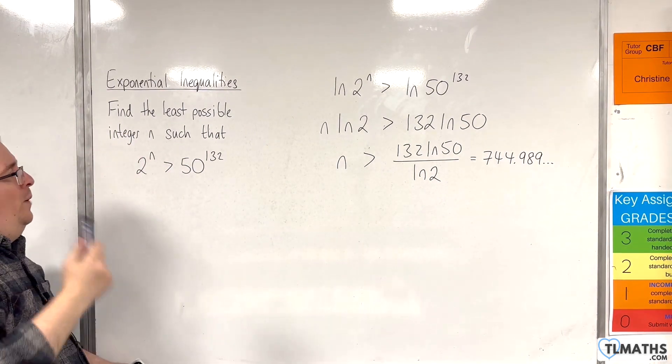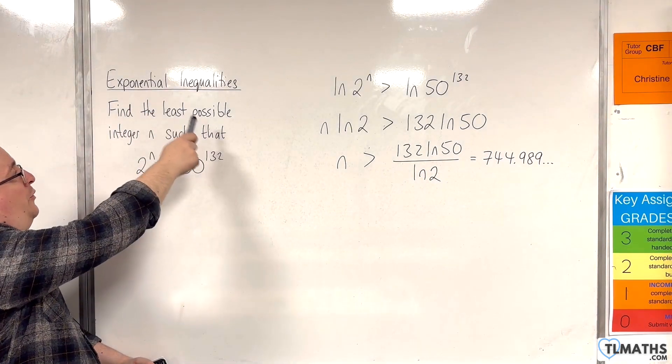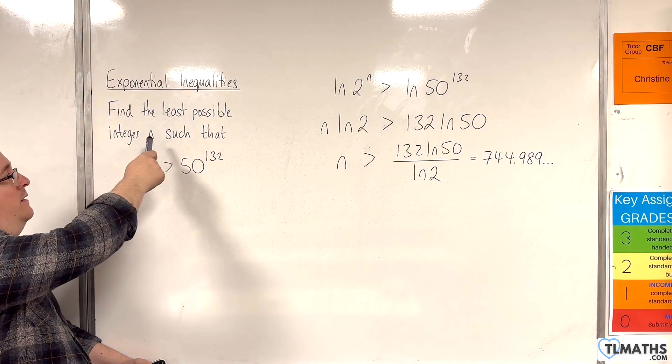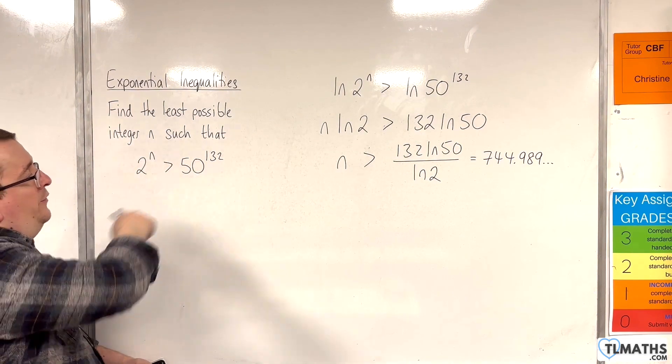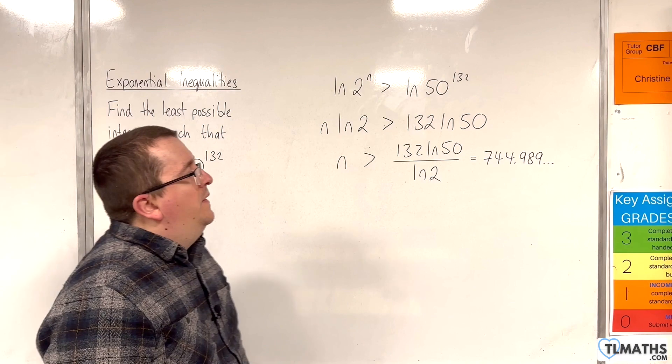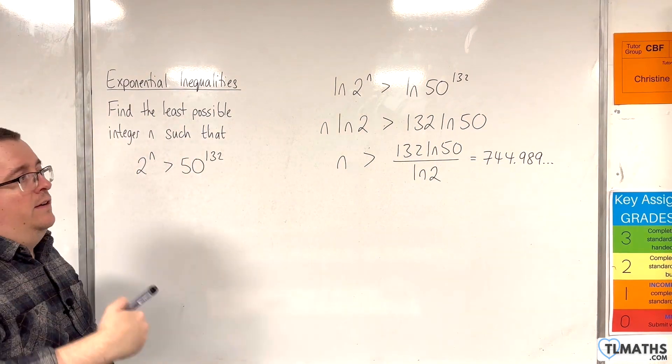So, the question asks, find the least possible integer n such that it solves that inequality. So, we want the least n that will solve it.